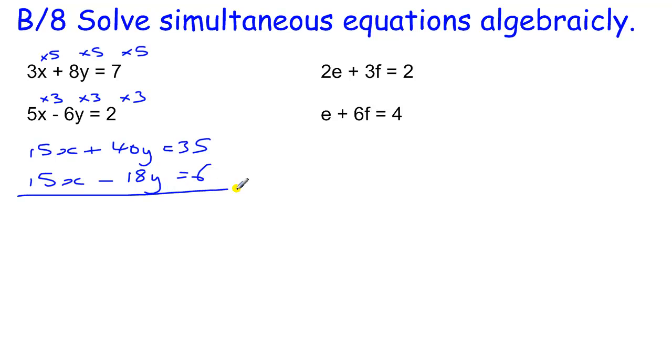Then I can eliminate the x's by subtracting everything on this bottom from the top. 15x take away 15x is 0x so that goes. 40y take away minus 18y is the same as adding 18y. You have to be very careful when you are subtracting to make sure you get the right sign here. 35 take away 6 is 29. Then we divide by 58 to work out y. So that is half.